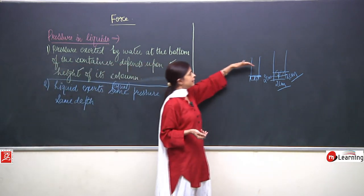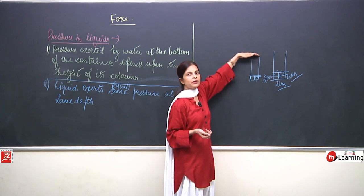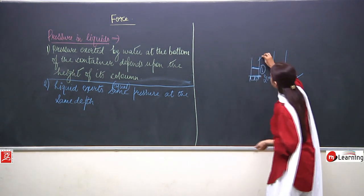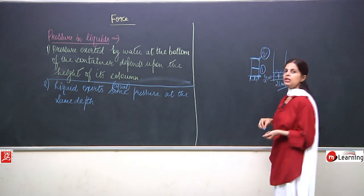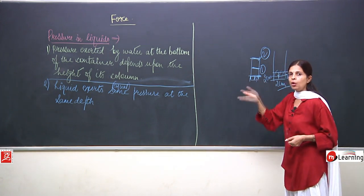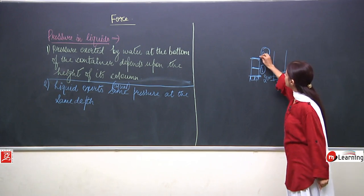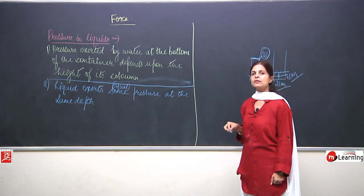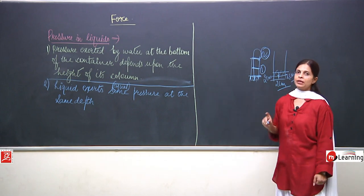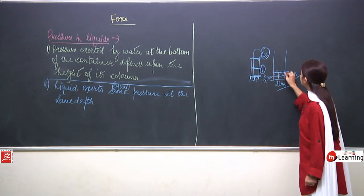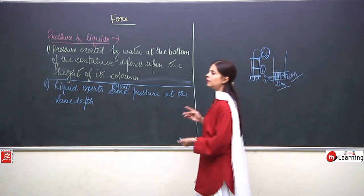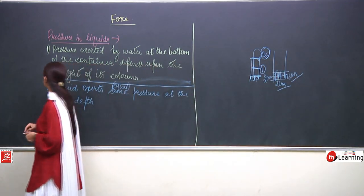Summary of the two points: Point one — pressure exerted by water at the bottom of the container depends upon the height of its column. If liquid is filled to a greater height, it exerts more pressure at the bottom. Point two — liquid exerts equal pressure at the same depth in all directions.